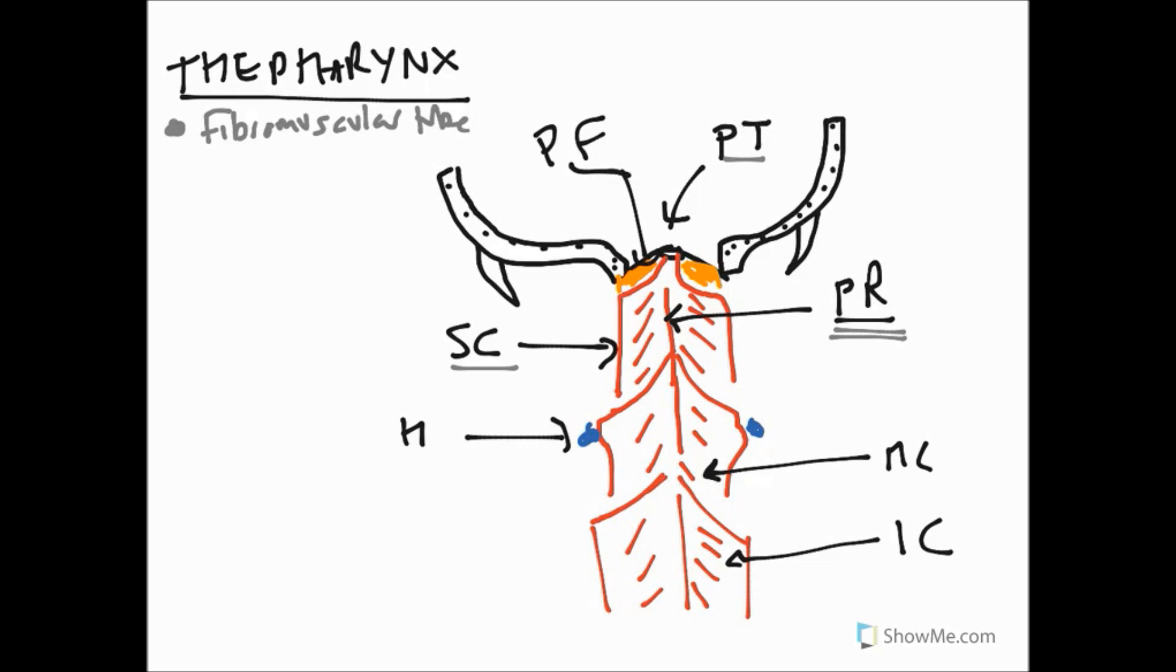So that's our superior constrictor. Our middle constrictor as we've seen has a relationship with the hyoid bone. It also attaches to something known as the stylohyoid ligament which actually comes down, and we'll draw on the stylohyoid ligament and a muscle that comes from the styloid process in a moment. This is the styloid process.